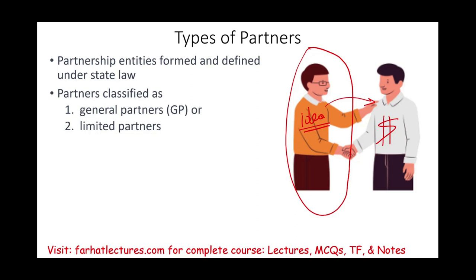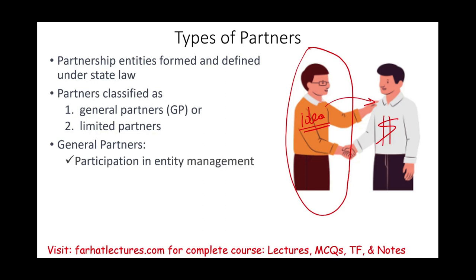Why do we call certain partners general partners and others limited? General partners — think of them as the people with the idea. Those are the people that are going to manage the company, manage the business, and participate in entity management. If someone comes to me with an idea and I have the money, I may have no clue about what that business is about, but from an accounting perspective the business looks profitable, so I invest. The general partners are the people that run the business.